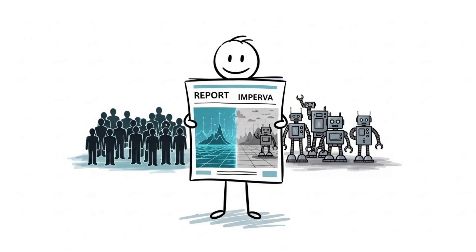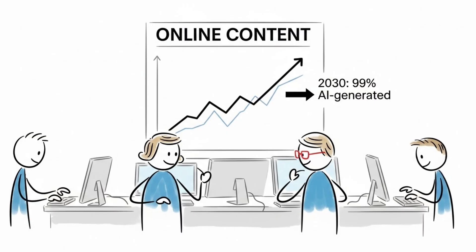In 2016, security firm Imperva released a report showing that 52% of all internet traffic was bots, surpassing human activity for the first time in history. Researchers predict that by 2030, up to 99% of online content could be AI-generated.